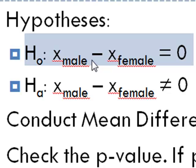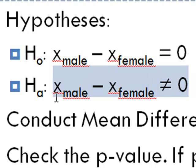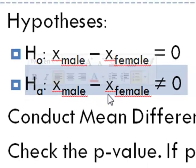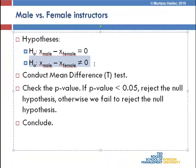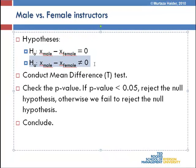In that particular case, the null hypothesis says there is no difference. The alternative hypothesis, written as HA, states that the difference between male and female teaching evaluations is in fact not equal to zero. We conduct the mean difference test and check the p-value. If our p-value is less than 0.05, we reject the null hypothesis; otherwise we fail to reject it, and based on that p-value we make a conclusion.